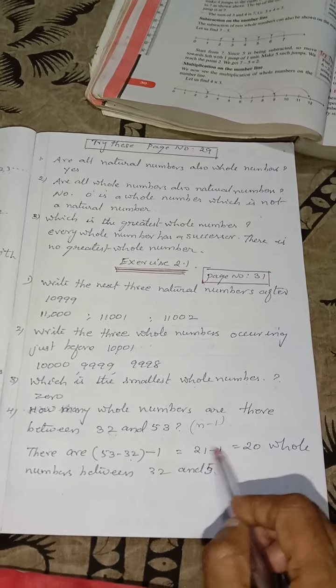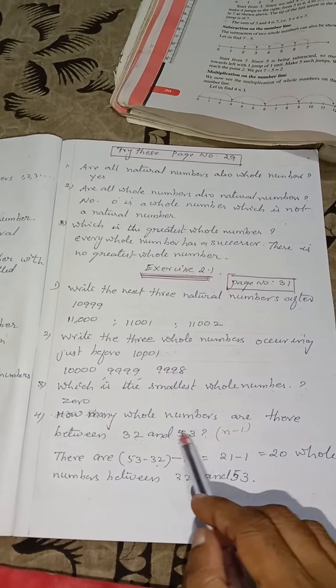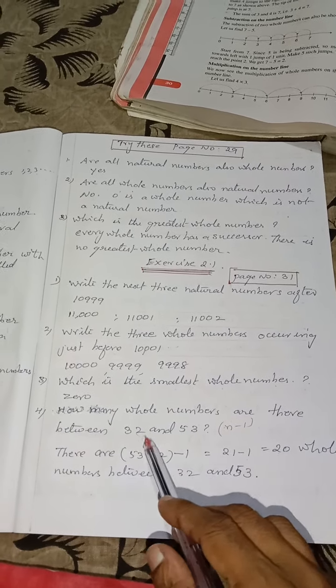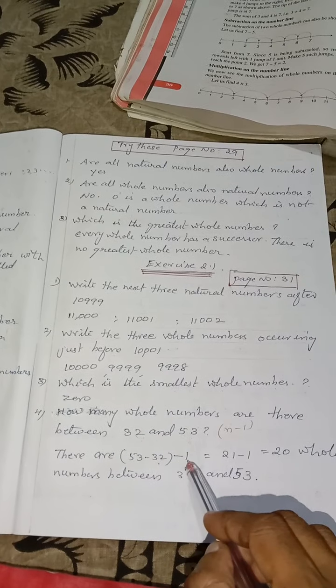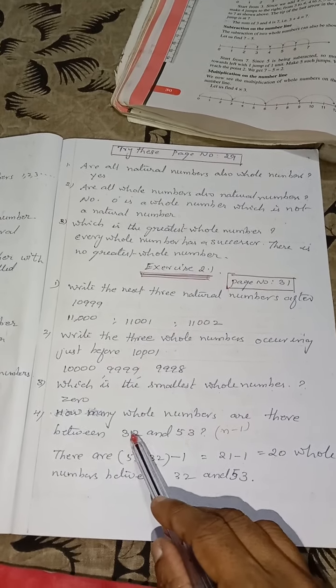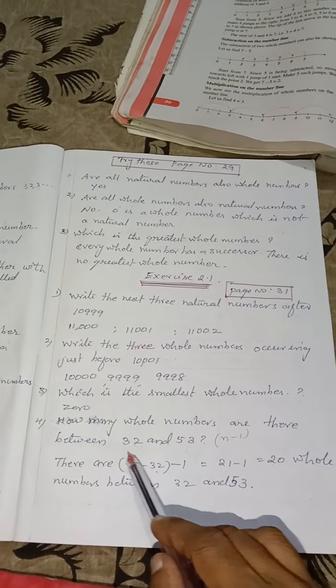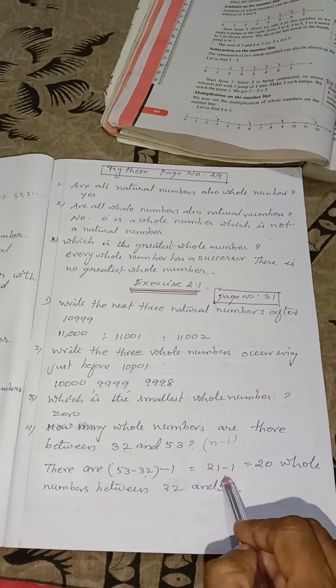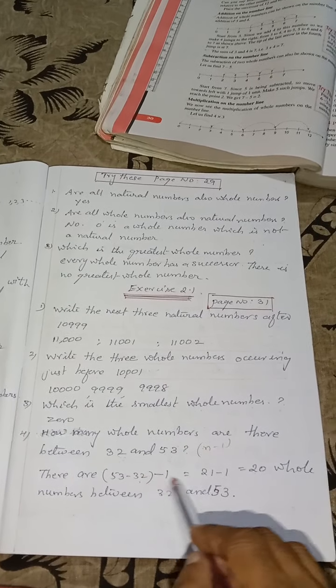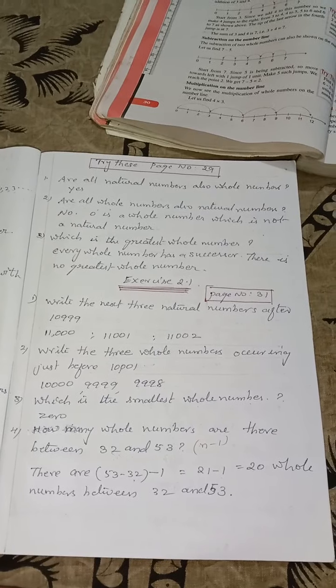So 21 minus 1. How many numbers will be getting? 20 numbers. So how to find this? Subtract this and minus 1. Because when you are subtracting, this 32 also will be included. So we have to exclude this number. Between only they are asking. So we have to exclude means we want to subtract that. So total number minus 1. We will be getting 20 numbers.